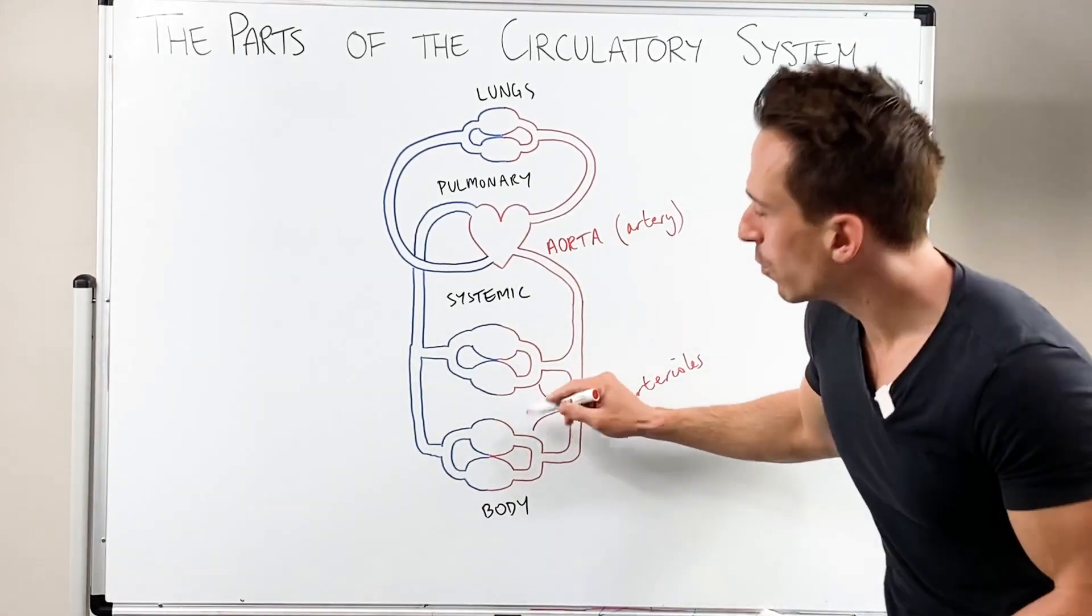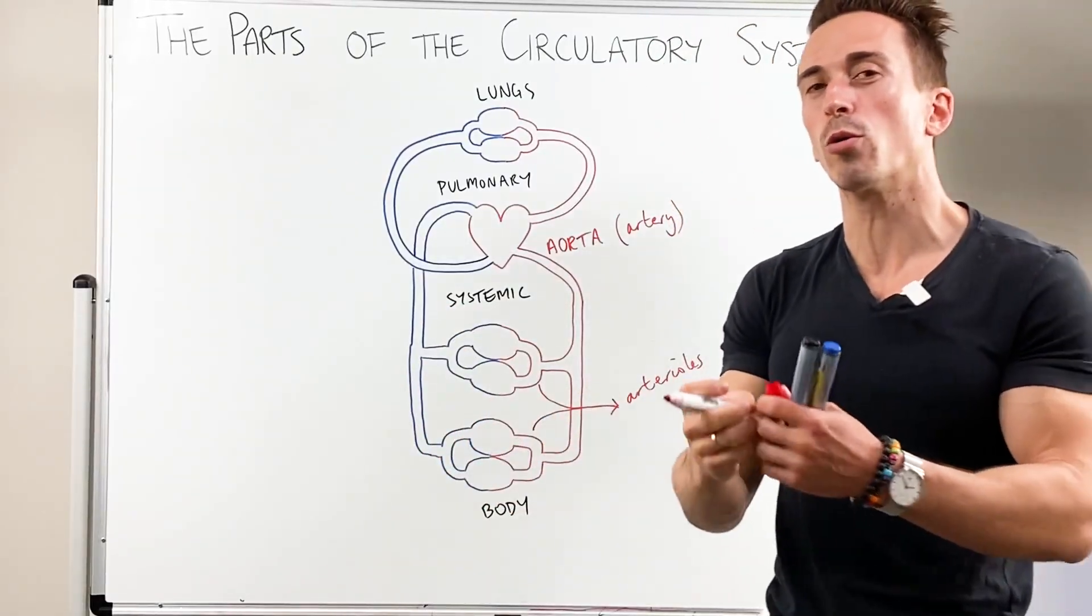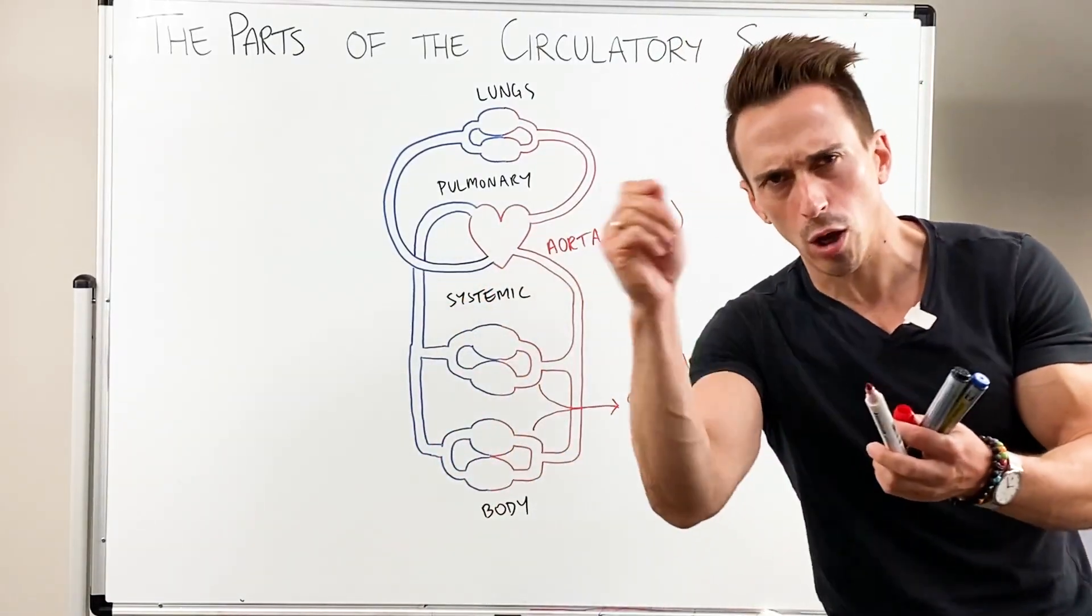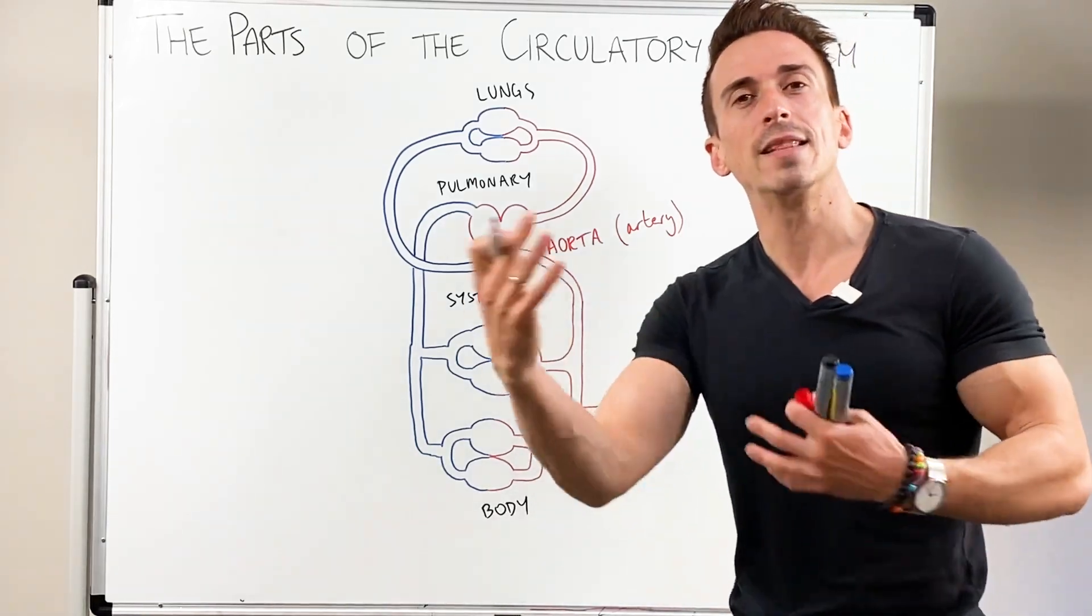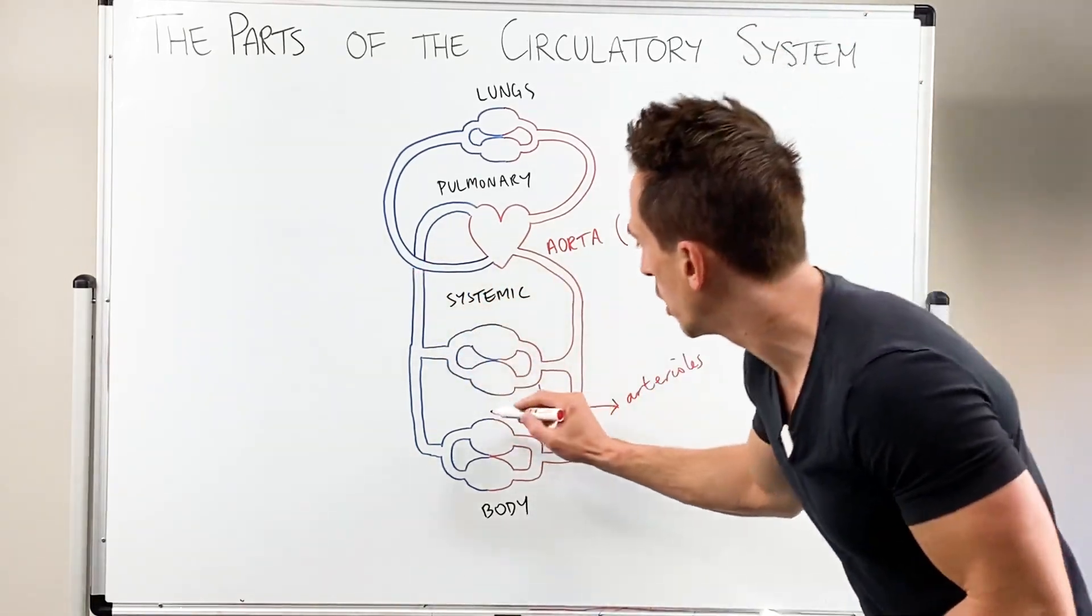And then the arterioles will branch even further into what we call porous blood vessels, so they got little holes in them. And these are capillaries. And now what we find is we've got multiple capillary beds. And this is where all the exchange occurs.